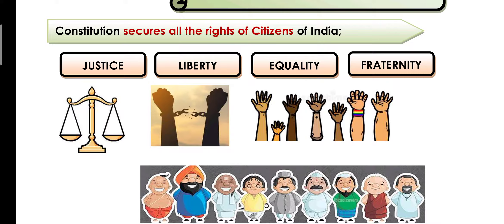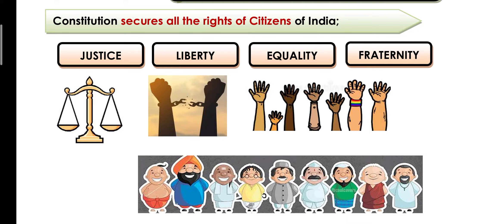Some rights are secured even for non-citizens. The Indian Constitution talks about justice — niyay — liberty — azadi — equality — samanata — and fraternity, which means brotherhood. The constitution protects and secures these rights for the citizens of India — giving justice without differentiation, talking about liberty so that no man is restrained for illegal purposes, and promoting common brotherhood.